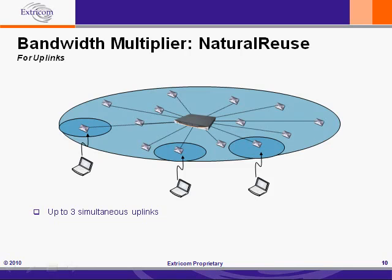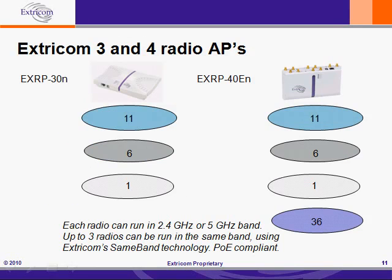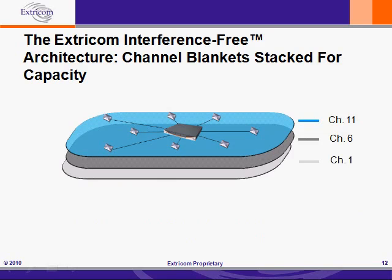Now let's add channels 1 and 6 to the Extracom deployment. We add channels 1 and 6 by activating two more radios inside Extracom's multi-radio AP. In our use case, we are deploying the EXRP 30N, which is shown on the left side of the slide. By activating the other radios inside the EXRP 30N, we now have three blankets of wireless LAN coverage stacked for capacity. Each blanket is operated by a different radio in the access point, ensuring there is no contention between the blankets at any time.